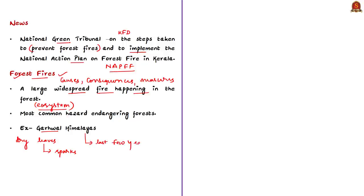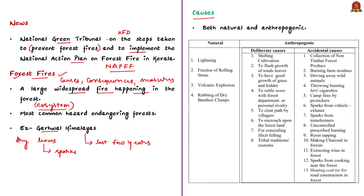The fundamental causes for frequent forest fires can be broadly classified into natural causes and anthropogenic causes. Natural causes include lightning, friction of rolling stones, and volcanic explosions. Man-made or anthropogenic causes include shifting cultivation or negligence by tourists. All the causes and their classification are given here for your reference.